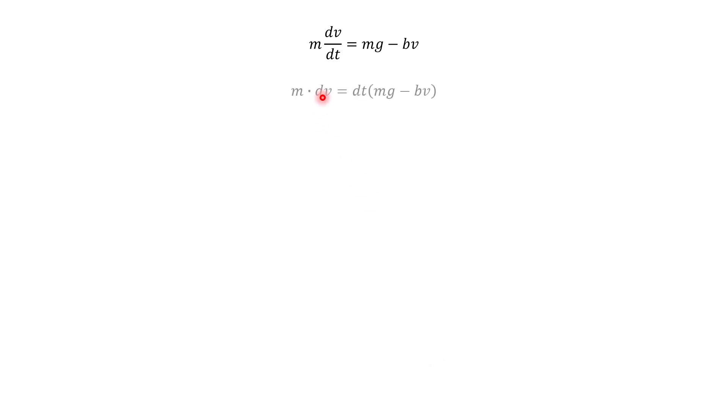So here's our equation, and the first thing I'm going to do is I'm going to go ahead and just multiply both sides of the equal sign by dt. Okay, so that's why it moved over here, and it's gone on the left.